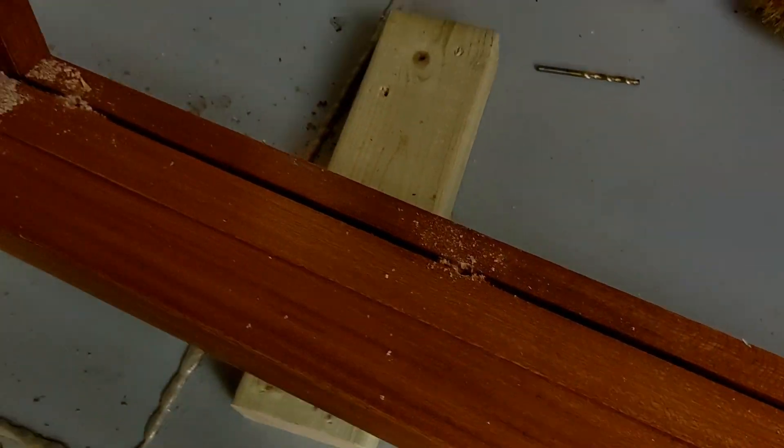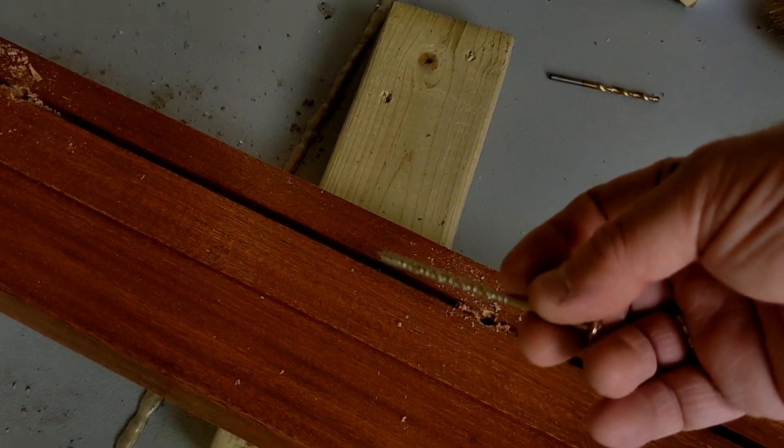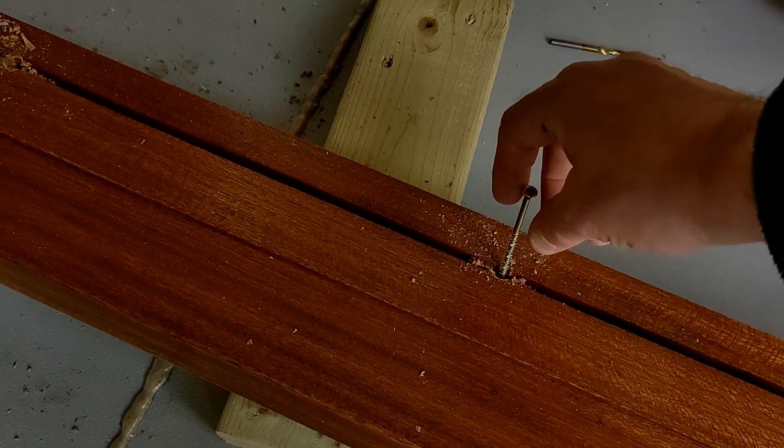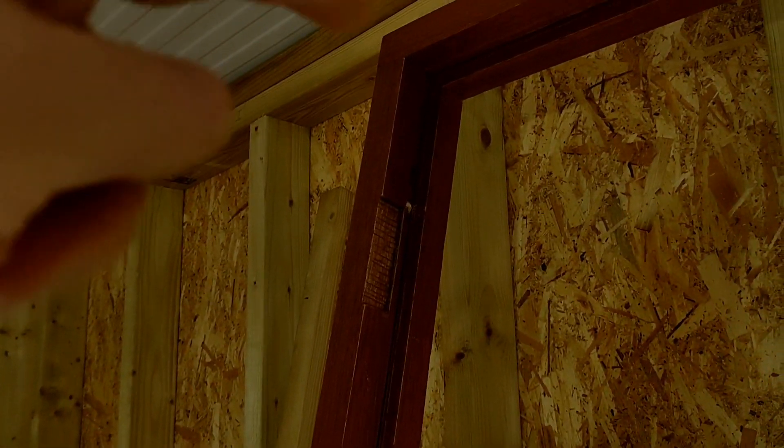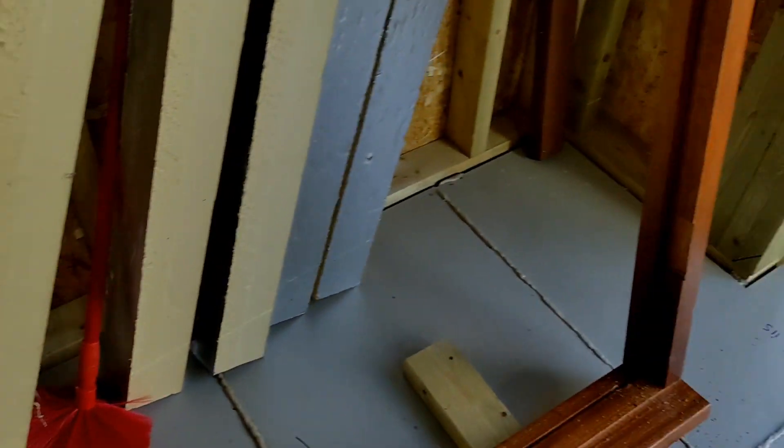And I'm fixing through with these 87 mil screws. I'm going through the point where the weather strip is going to go, so the screw heads will be hidden. Same down the sides, I've marked four points there. I've gone about 15 in from the top and the bottom, and then equal spacing to give me four fixing points each side.